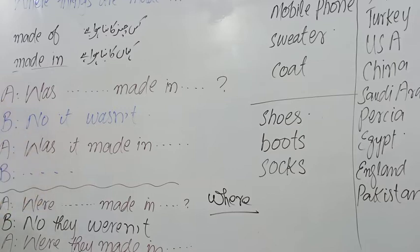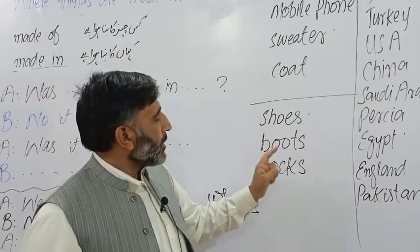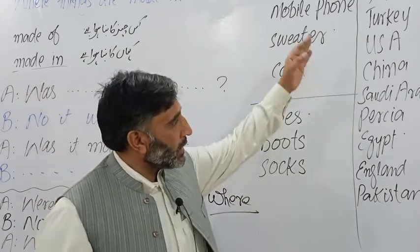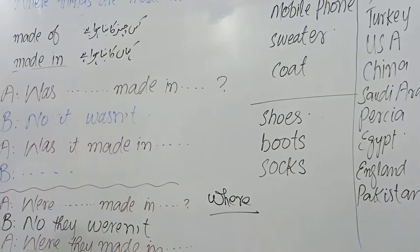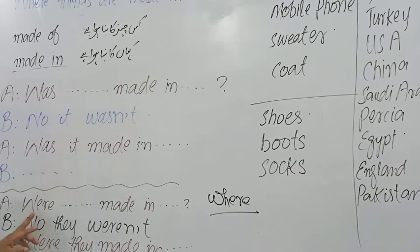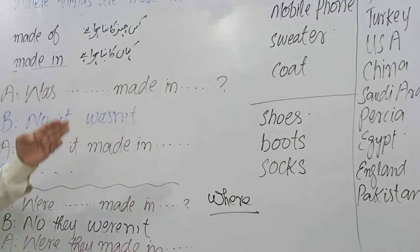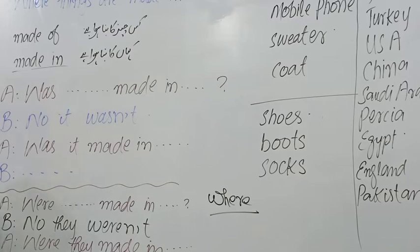Now for socks. Were they made in India? No, they weren't — we say 'they' because socks are more than one thing. Were they made in Turkey? No, they weren't. Were they made in USA? No, they weren't. Were they made in China? No, they weren't. Were they made in Saudi Arabia? No, they weren't. Were they made in Egypt? No, they weren't. Were they made in England? No, they weren't. Were they made in Pakistan? Yes, they were. These socks were made in Pakistan.